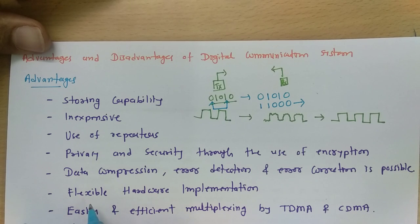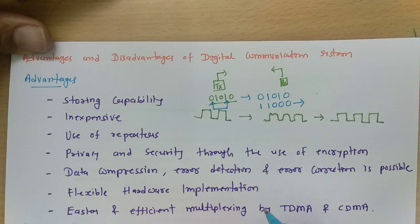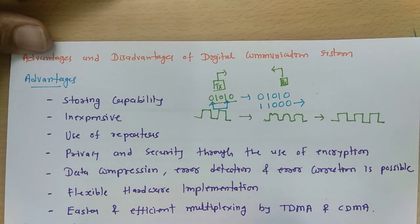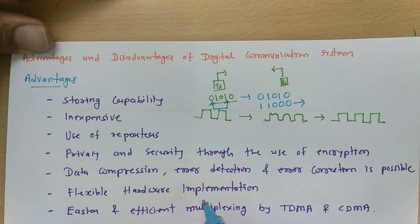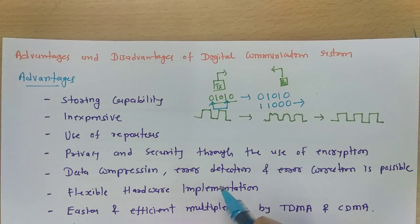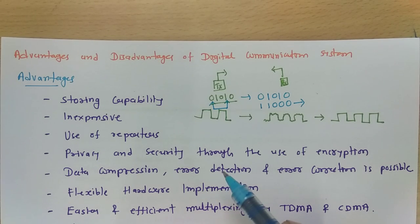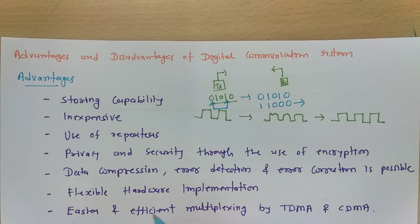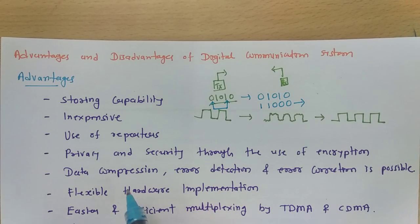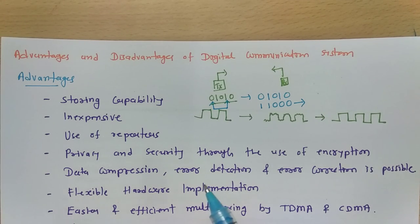Another advantage is flexible hardware implementation. The hardware used in digital communication systems is flexible — if the system requirements change, you can change the programs to use the same hardware for other applications. In analog systems, this flexibility doesn't exist. In digital systems, by using VLSI technology and microprocessors, we can change programs and adapt hardware for different applications, which is a very important advantage.